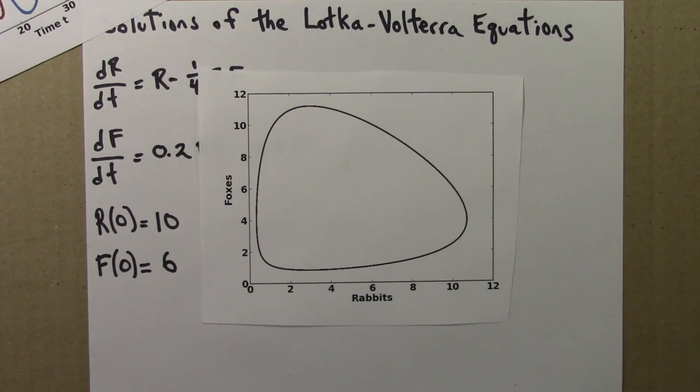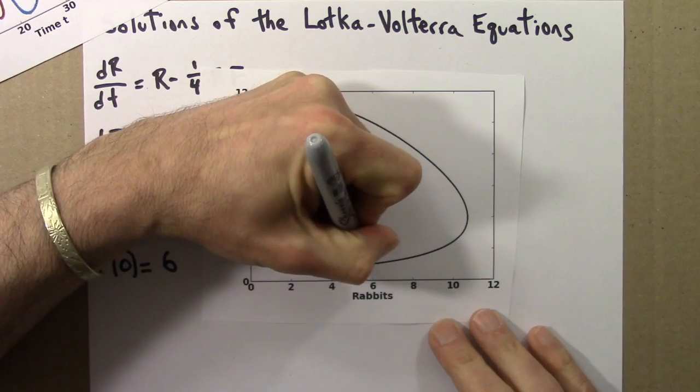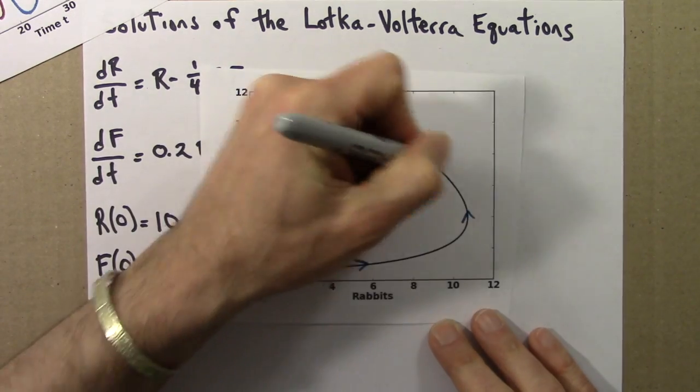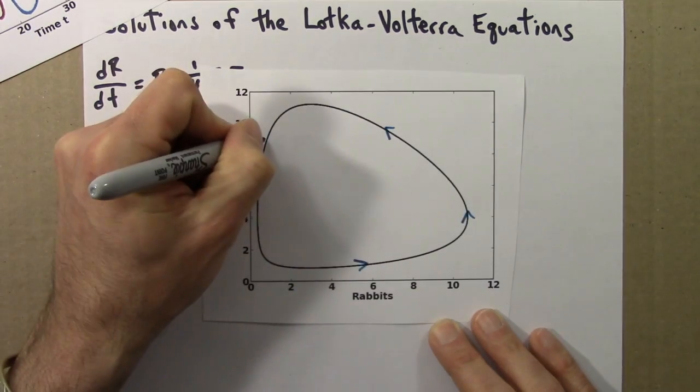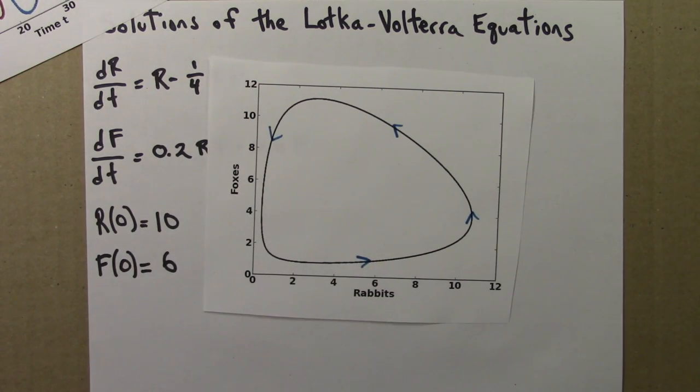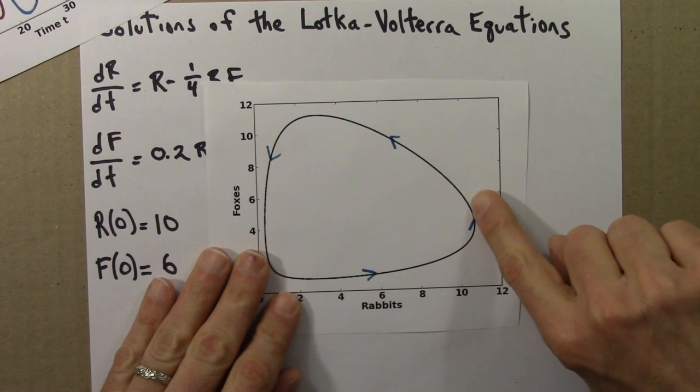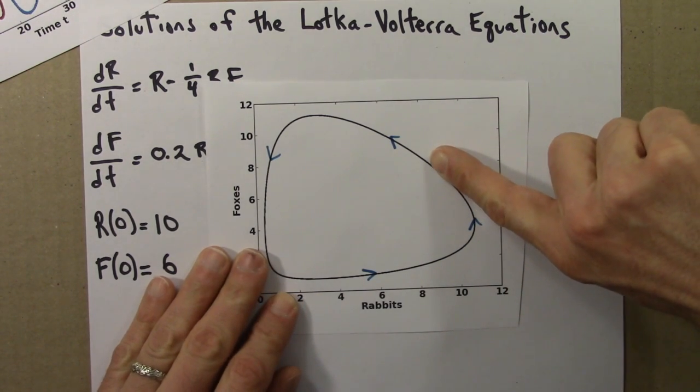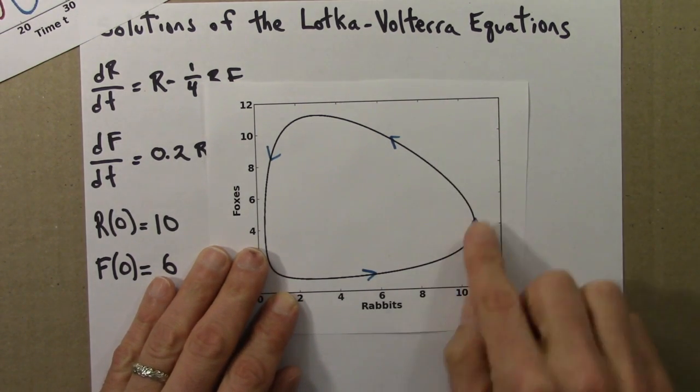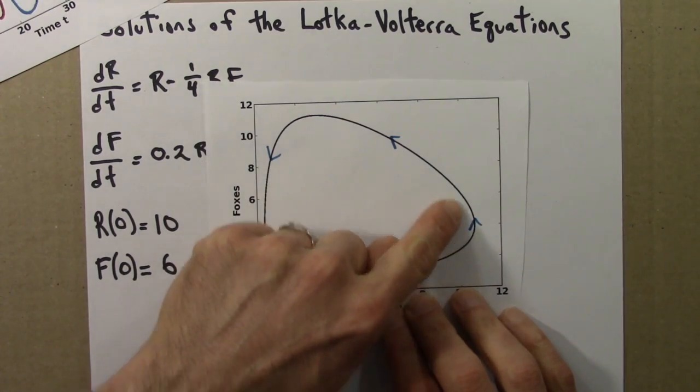I should probably put some arrows on here to make it clearer which way the motion is. So we move this way and then the rabbit population starts to decrease but the fox population is still increasing. Why? Because we're going up.